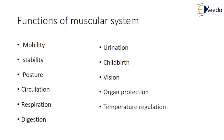Urination: the urinary system comprises both smooth and skeletal muscles, including those in the bladder, kidneys, penis or vagina, prostate, and urethra. The muscles and the nerves must work together to hold and release urine from the bladder.